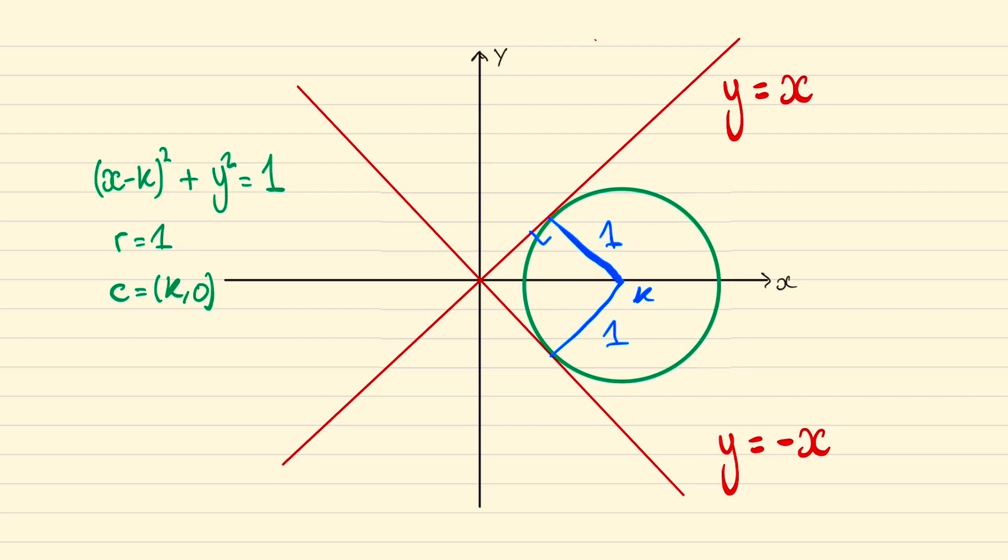And so we know there'll be a 90 degree angle here because it's perpendicular and here. Likewise y equals x is perpendicular to y equals minus x so we have a 90 degree angle here and thus this angle is also 90 degrees.